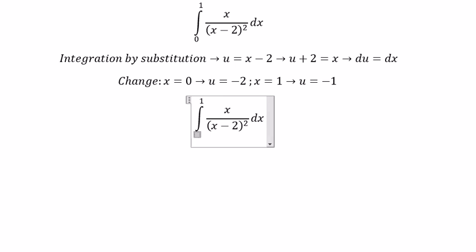We change the lower bound to negative 2, the upper bound to negative 1. We change x to u plus 2. We change dx to du. This becomes 1 over u and we have 2 over u squared.